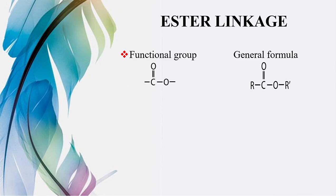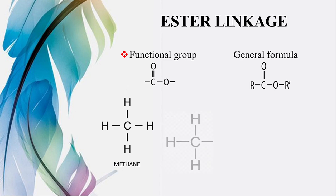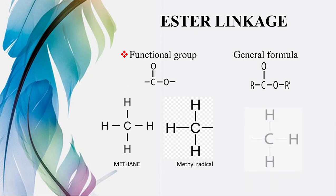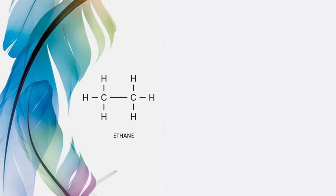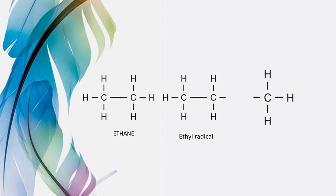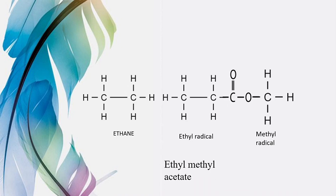Ester linkage: C double bond O, then O (single bond), then R — general formula R-C(=O)-O-R'. R aur R' yahan represent kar rahe hain ke dono taraf same alkyl radicals bhi ho sakte hain, dono taraf different alkyl radicals bhi ho sakte hain. Jaise is waqt humare paas hai methane, ek hydrogen remove kiya — ban gaya methyl radical — aur isi tarah se ek aur methyl radical, kyunke do R chahiye, center mein C double bond O then oxygen aayega. To yeh ban gaya methyl acetate. Isi tarah se ethane se ethyl radical, dusri taraf methyl radical, aur darmiyaan mein C=O-O functional group — yeh hai ethyl methyl acetate with ester linkage.